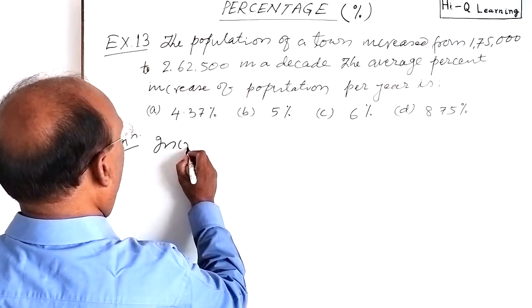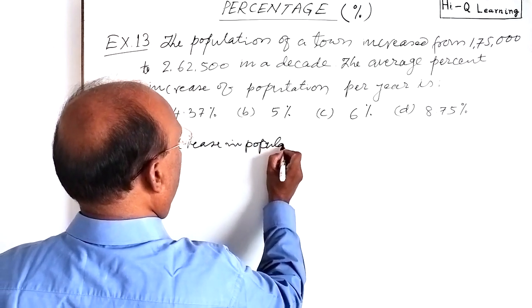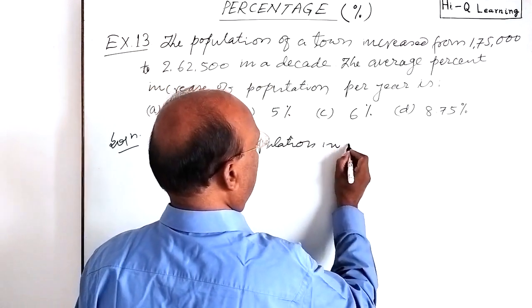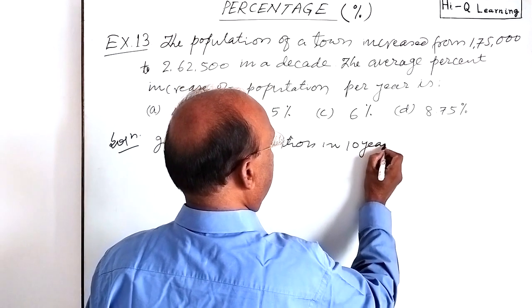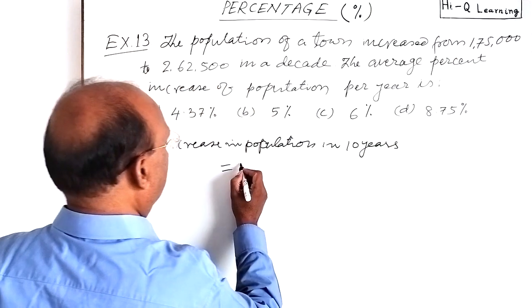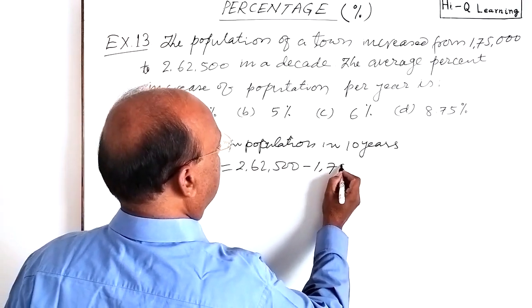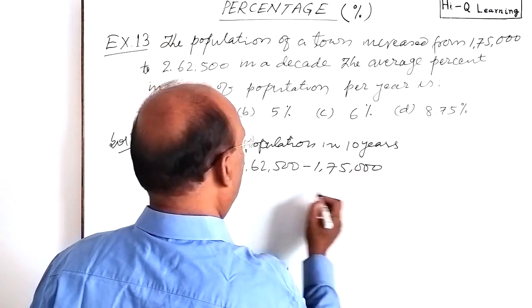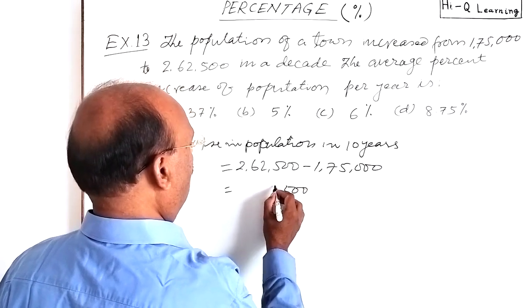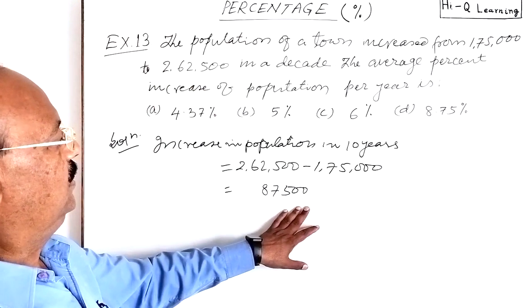So increase in population in a decade, means in 10 years, this is equal to 262,500 minus 175,000, and this is equal to 87,500.